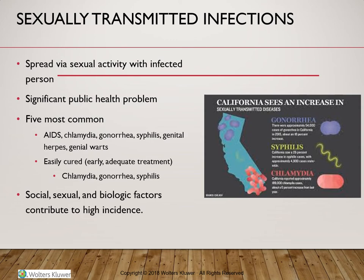There are some STIs that are considered reportable conditions and they require national reporting to the Centers for Disease Control and Prevention, the CDC. Those include chlamydia, gonorrhea, hepatitis B, HIV, syphilis, and chancroid. Recently, Zika virus was added to the list. Reporting infections with human papillomavirus is not required, despite HPV being one of the most common STIs in the United States. All those reportable conditions are actually easily treatable and curable with early and adequate treatment.